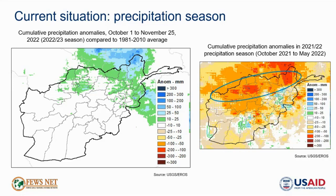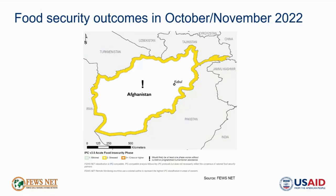Looking at current food security outcomes, this is FEWS NET's remote monitoring map of food security outcomes in October and November 2022. In January 2022, FEWS NET officially transitioned Afghanistan to a remote monitoring country given the Taliban takeover and the fact that we no longer have colleagues working in the country. The worst area level phase expected in Afghanistan in October to November 2022 is Stressed, or IPC phase two exclamation mark, given seasonal improvements in food availability from own crop production and income from crop sales and harvesting labor, alongside significant humanitarian assistance — denoted by the exclamation mark — which is expected to be preventing worse food security outcomes at the area level.